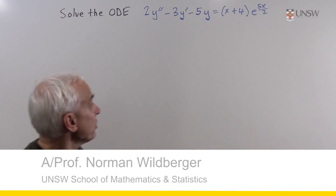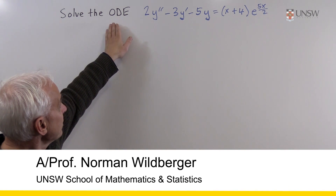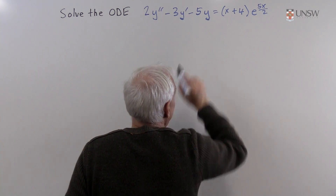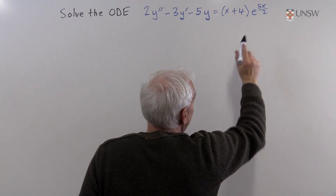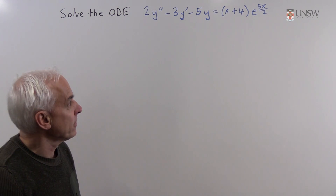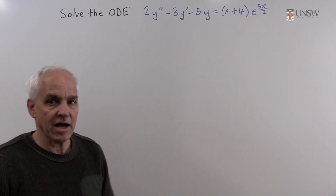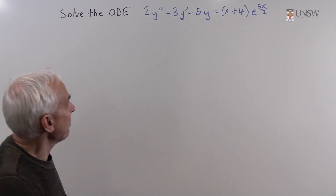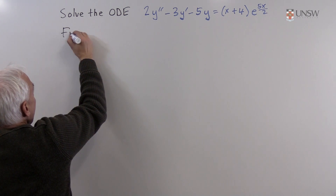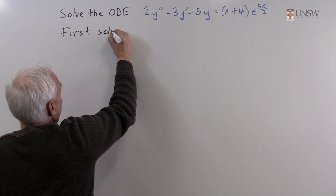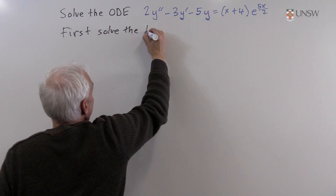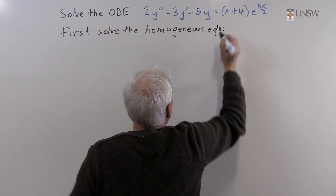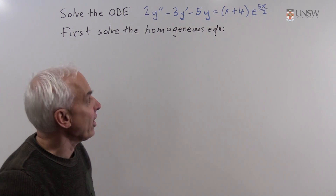This question is an ordinary differential equation. We're asked to solve the second degree ODE: 2y'' - 3y' - 5y equals (x + 4) times e to the 5x over 2, where y is some unknown function of x that we are trying to determine. The first step is to solve the homogeneous equation that we get by replacing the right hand side with zero.